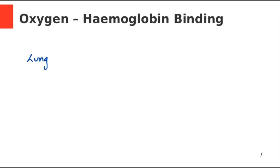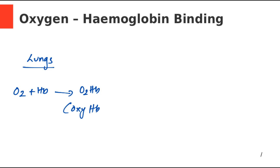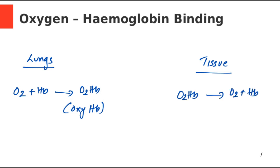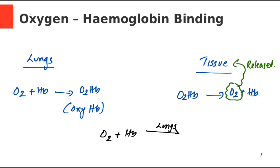Oxygen binds to hemoglobin at the lungs. Oxygen combines with hemoglobin to form a compound known as oxyhemoglobin. This oxyhemoglobin flows into tissues through the blood. When it reaches the tissues, oxyhemoglobin dissociates into oxygen and hemoglobin, and this dissociated oxygen diffuses into the tissues to perform metabolic activities. So we have a bidirectional equation: oxygen and hemoglobin combine in the lungs to form oxyhemoglobin, and in the tissues the reverse reaction releases oxygen.